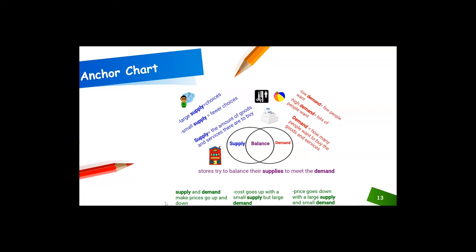I created this anchor chart about supply and demand. Let's look at the center — supply is on one side of the Venn diagram, demand is on the other side, and balance is in the middle where they overlap, meaning they have just enough supply for the demand. A large supply means lots of choices; a small supply means fewer choices. Low demand means few people want it; high demand means lots of people want it. Stores try to balance their supplies to meet the demand. Supply and demand make prices go up and down in the market — cost goes up with a small supply but large demand, and price goes down with a large supply and small demand.